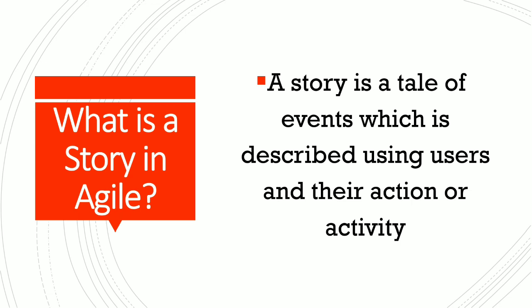Now let me share an analogy. In Mahabharata, Arjuna is a user whose persona is that he is an archer. His action and activity in the user story was to fight against evil. In Ramayana, Lord Rama is a user whose persona is he is the king of Ayodhya, husband of goddess Sita. His action and activity in the story was to spread love and prevail justice.